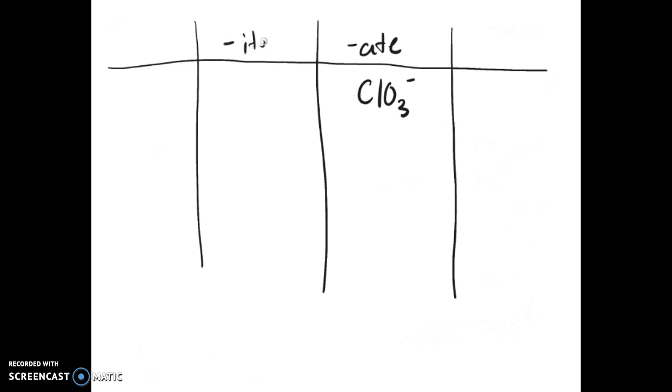If it has one less oxygen atom, it is the -ite form, which in this case is ClO2, still with the one minus charge, keeps the charge of the original anion. And then hypo-ite, which would be hypochlorite, which is ClO with a minus charge. On the other end of the spectrum with one more oxygen instead of one less or even more, one less or two less, you have the per-ates, which would be perchlorate, which is ClO4 with a one minus charge.